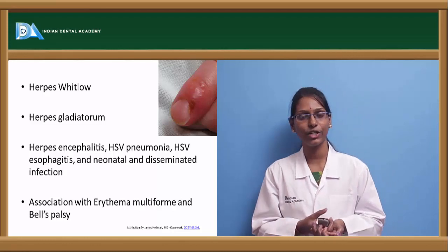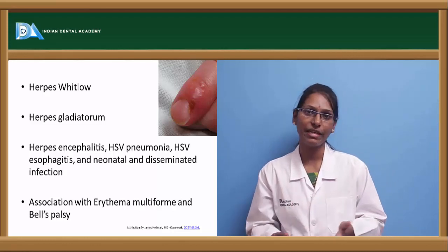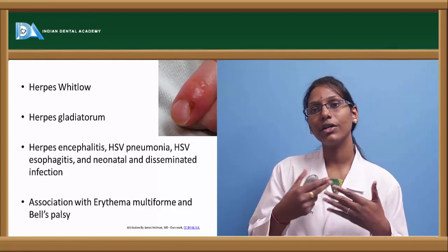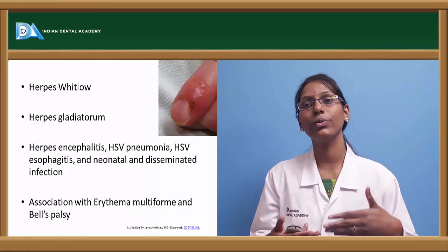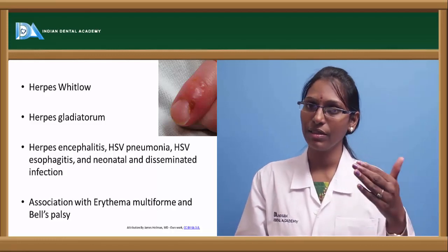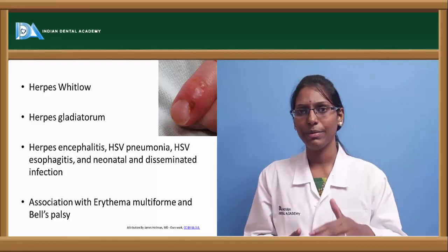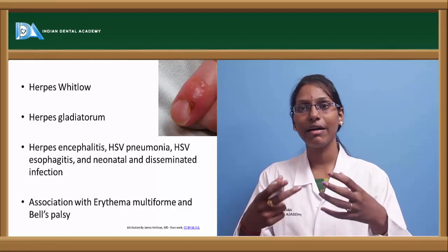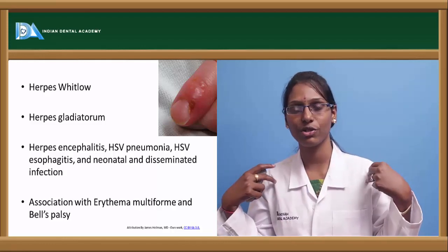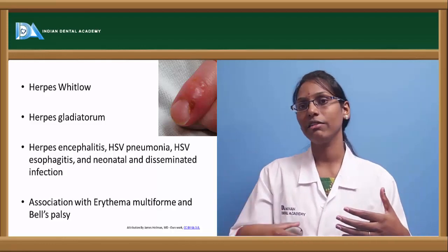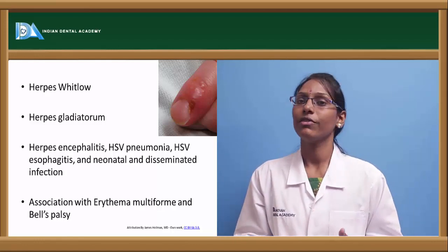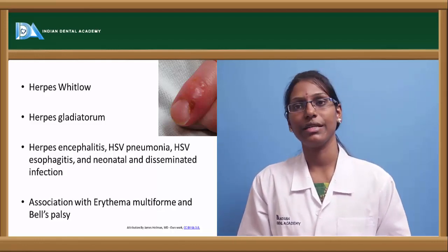Next is herpes gladiatorum. As the term itself suggests, it is most commonly seen in wrestlers. A normal person who is fighting or wrestling with someone already affected with herpes simplex has the virus inoculated onto his trunk or other regions of the body wherever touched by the infected person — this is called herpes gladiatorum.